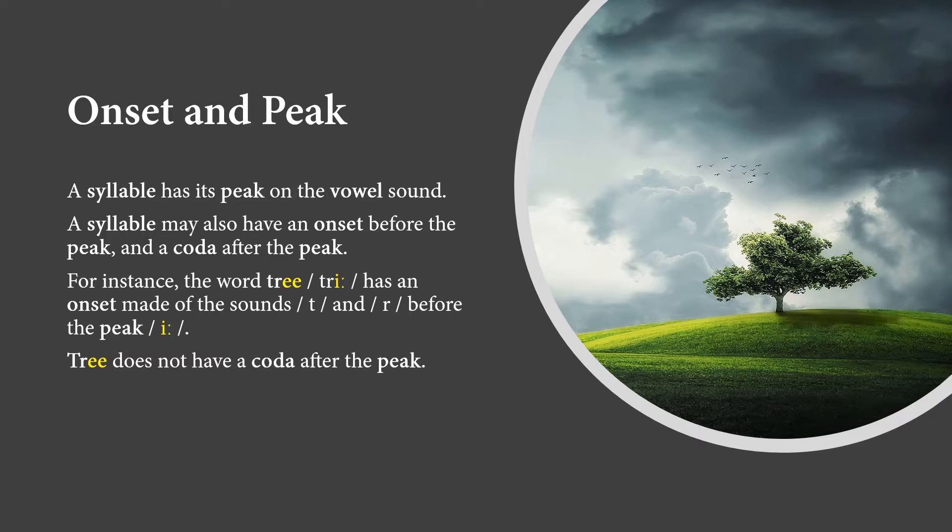Onset and Peak. A syllable has its peak on the vowel sound. A syllable may also have an onset before the peak, and a coda after the peak. For instance, the word tree has an onset made of the sounds T and R before the peak E. Tree does not have a coda after the peak.